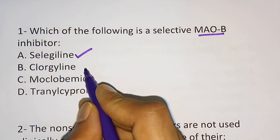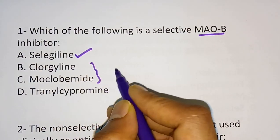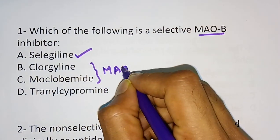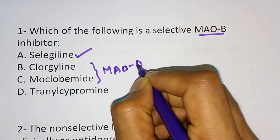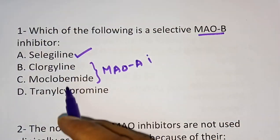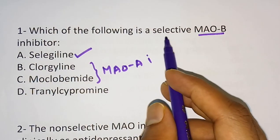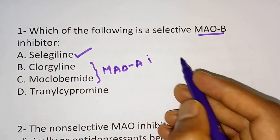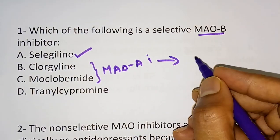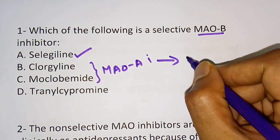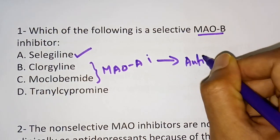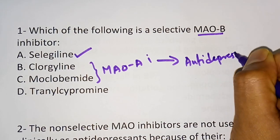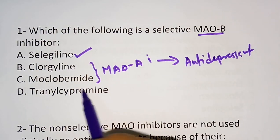Now, what are Clorgyline and Moclobemide? They are selective MAO-A inhibitors. Clorgyline and Moclobemide are selective MAO-A inhibitors, and they are used as antidepressants.